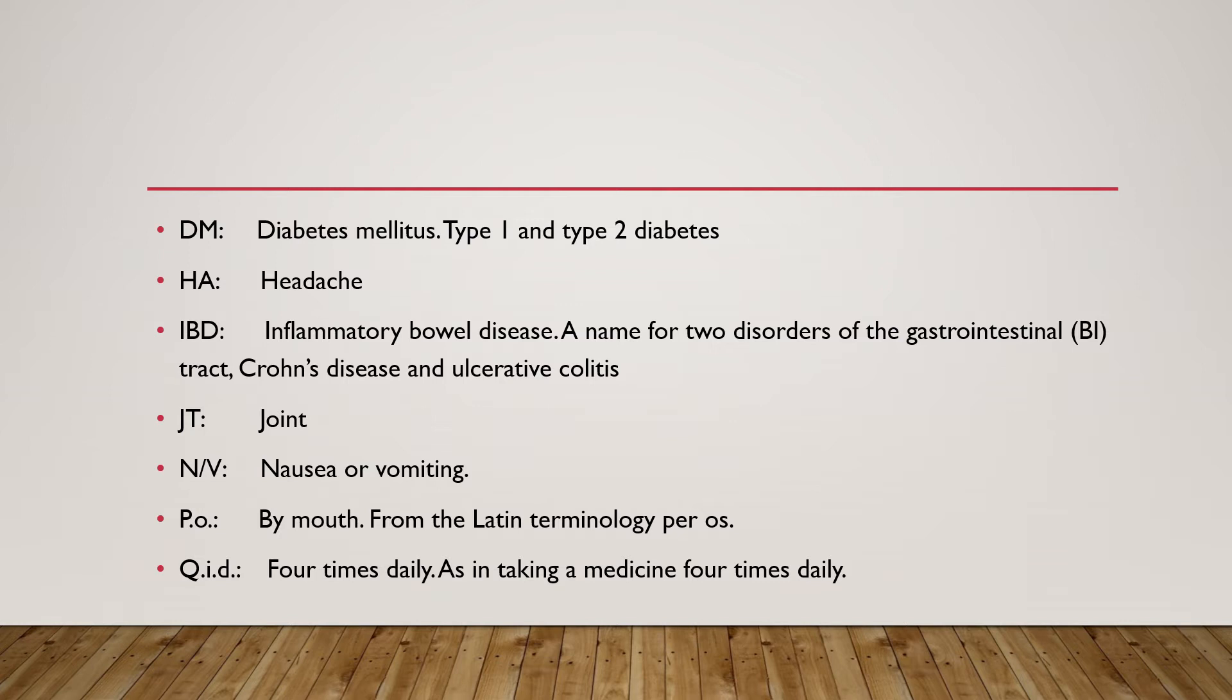Crohn's disease and ulcerative colitis. JT: joint. NV: nausea or vomiting. PO: by mouth, from the Latin terminology per os. QID: four times daily, as in taking a medicine four times daily.